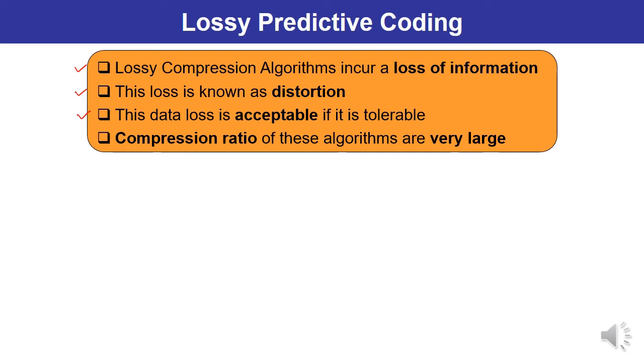In case of lossy compression algorithms, compression ratio is usually very large. We have discussed about the lossless image compression also. You have seen in various coding techniques, algorithms, Huffman, Shannon, Fanno, Bitplane, Arithmetic coding and lossless predictive coding as well.